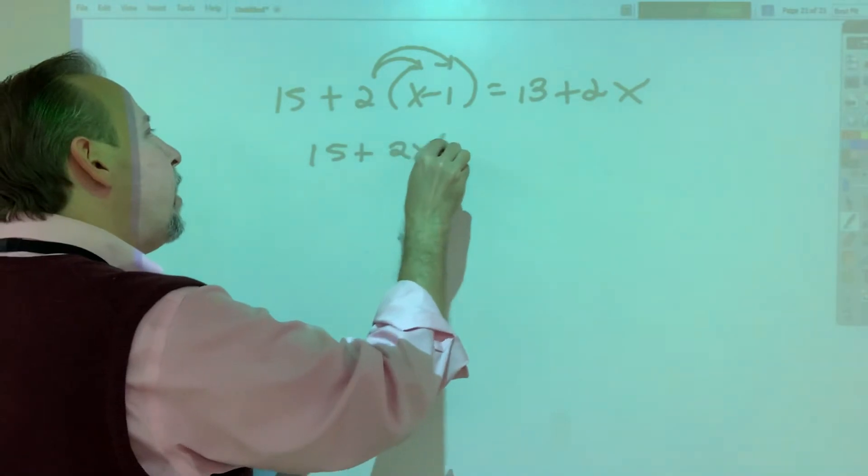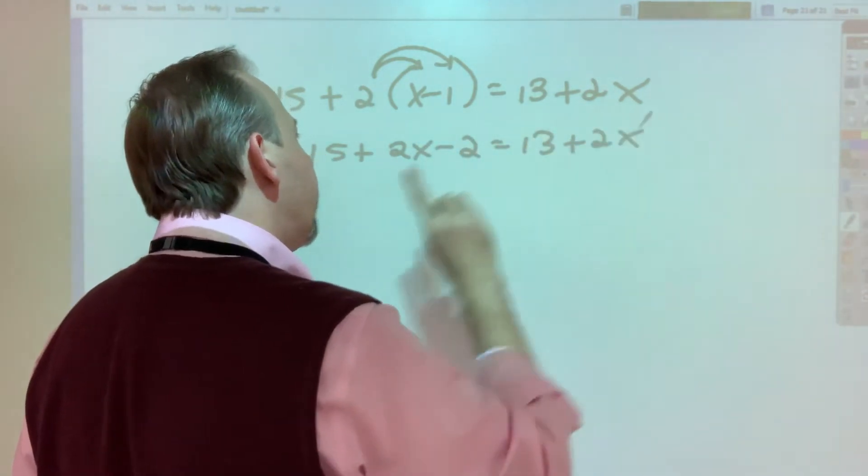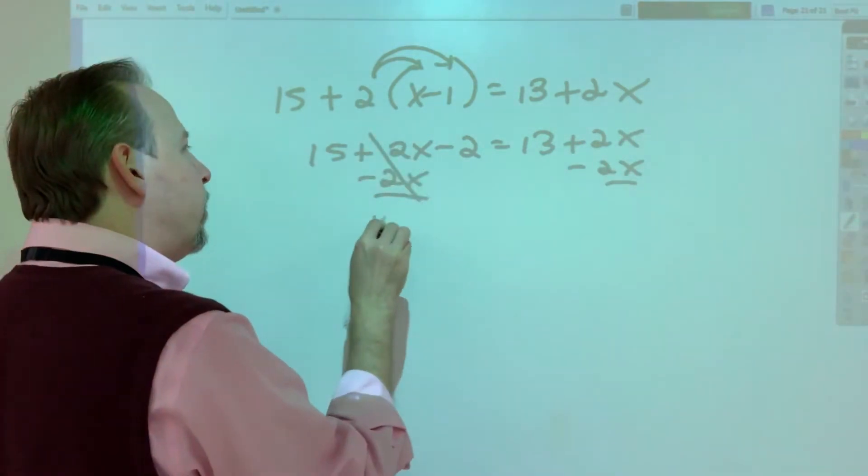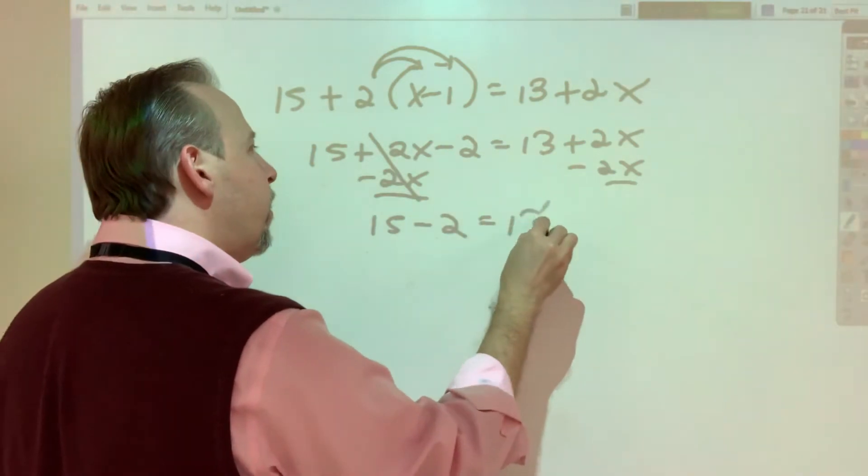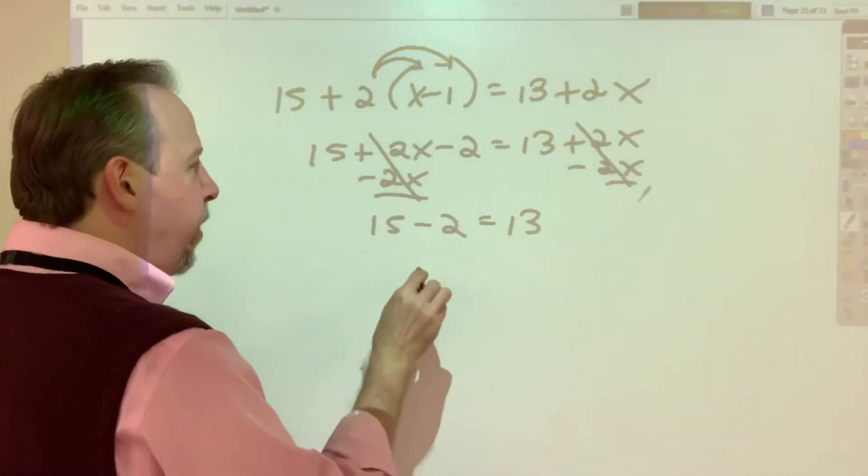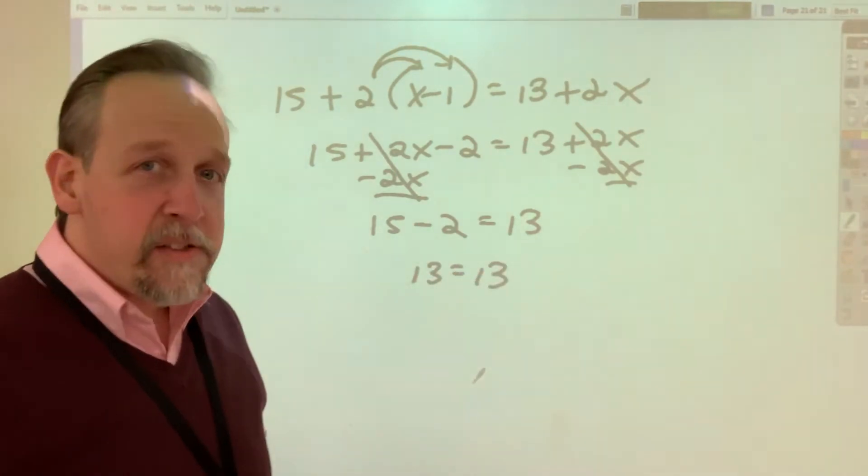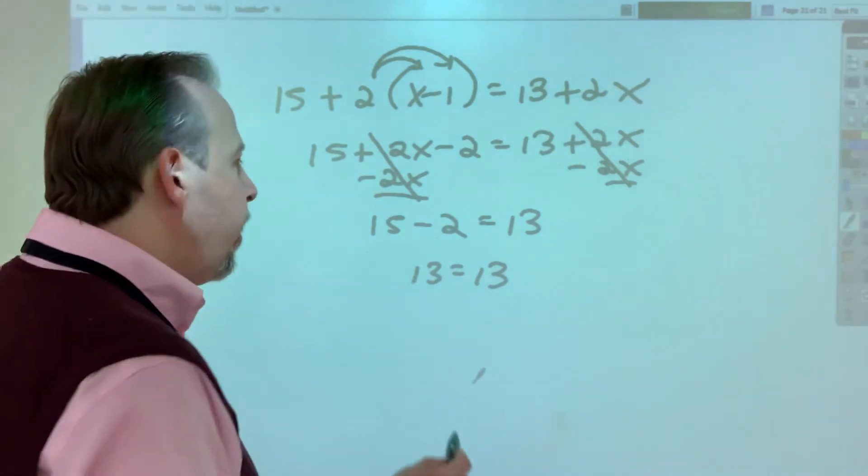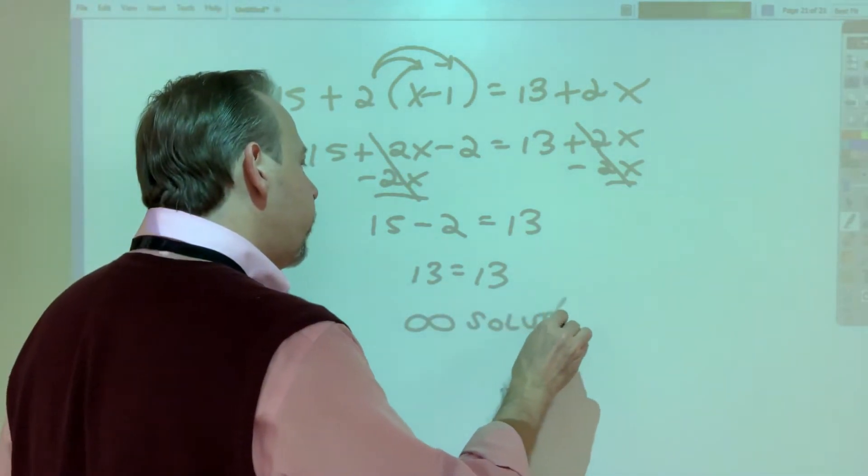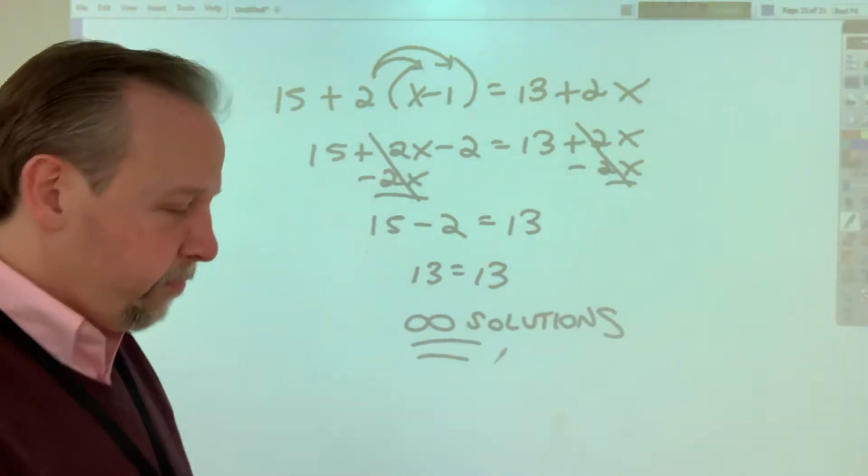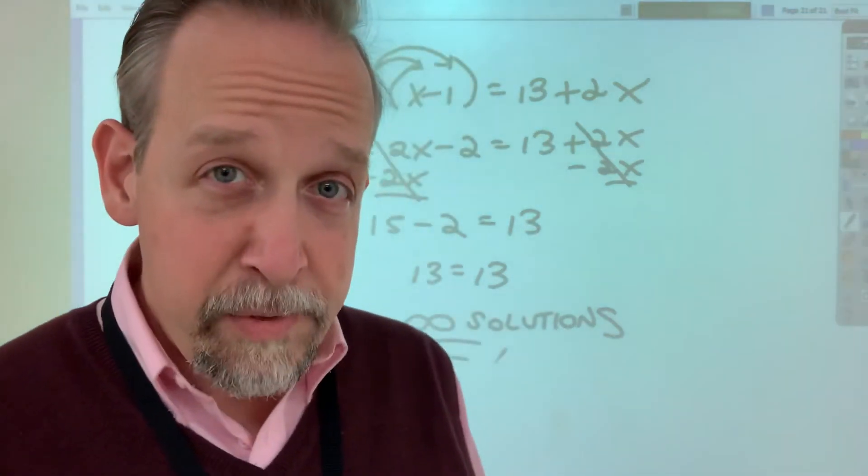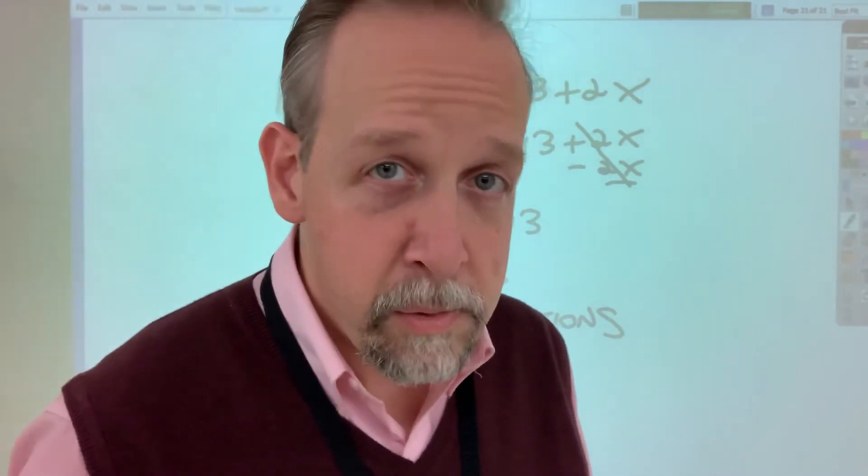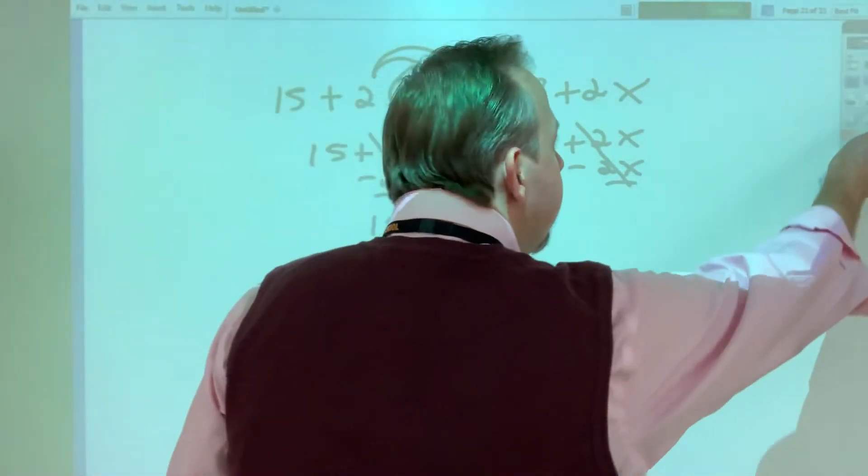15 plus 2x minus 2 equals 13 plus 2x. I'm going to subtract 2x from both sides so I can get them on one side. But as it turns out, 15 minus 2 is left here, 13. That also cancels. 15 minus 2 is 13. I got a solution where the variable disappeared, but the numbers that are left over are true. 13 does equal 13. That means that there are infinite solutions. If you don't tell me when it's a special case, if you don't say infinite solutions or no solution, you don't really get full credit for that problem because that's what it's telling you. So you have to report that finding.